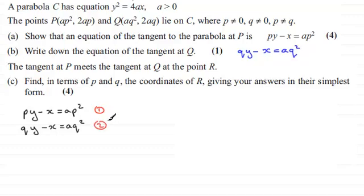What I'm going to do is equation one minus equation two. Doing that will take out the x's here. We're going to have py minus qy, and I'm going to factorize that to (p minus q) times y.